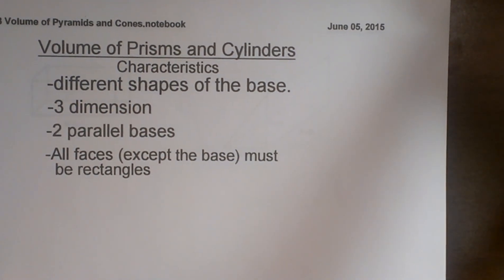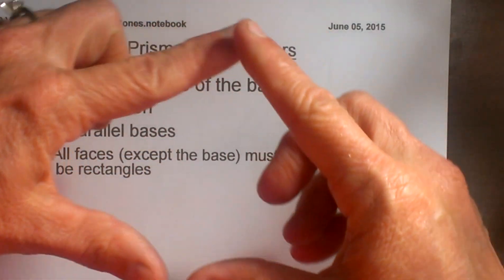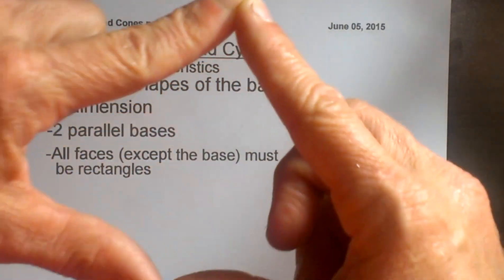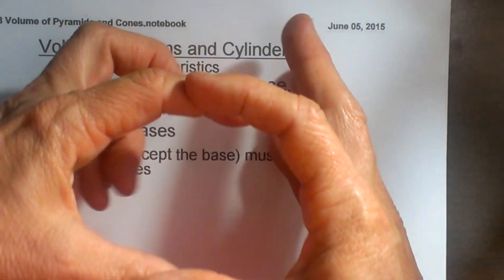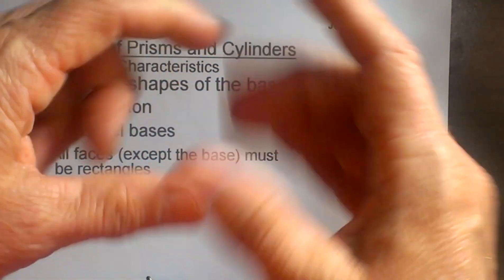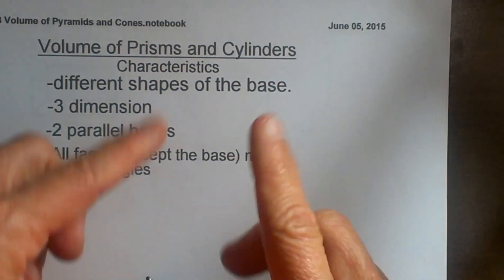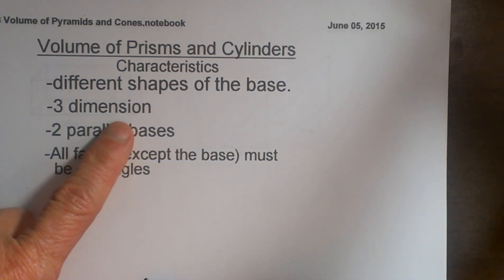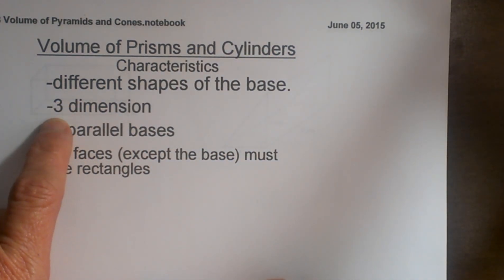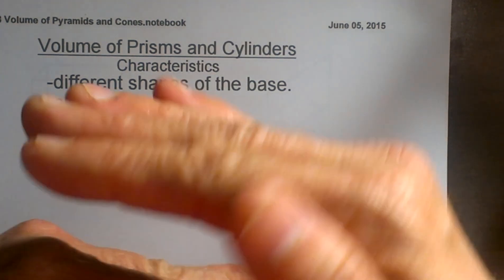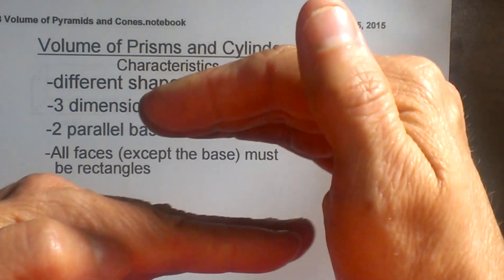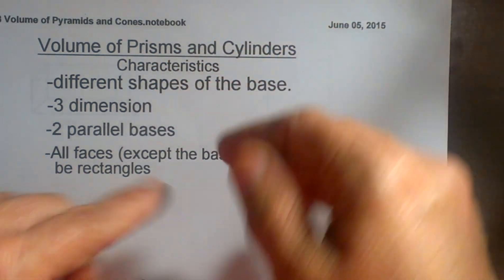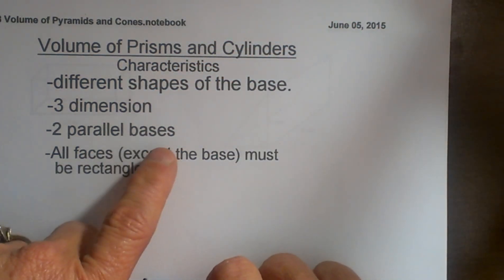Prisms and cylinders all have different shapes of bases. You may have a square base and it comes straight up, a circular one which falls into the cylinder category, or a triangular base that comes straight up. The shapes are three dimensional with a length, width, and height. They have parallel bases — that is how you decide what the bases are — and all the faces except the bases have to be rectangles.